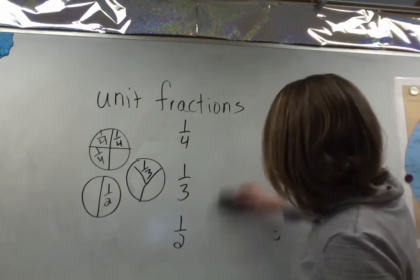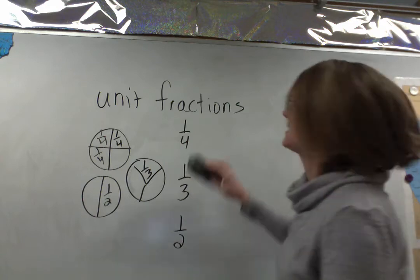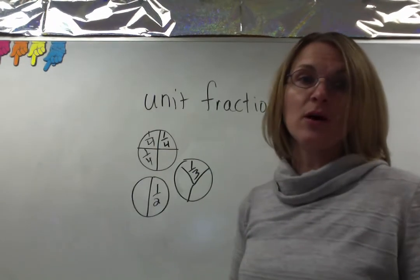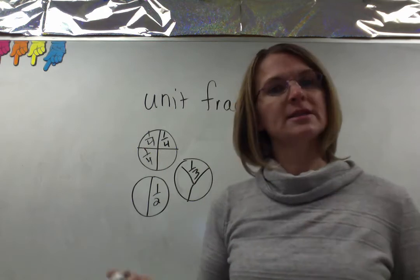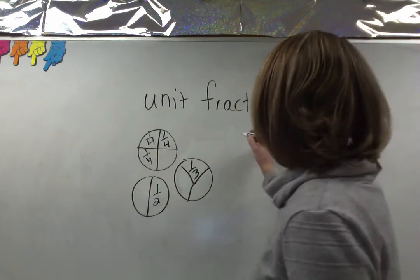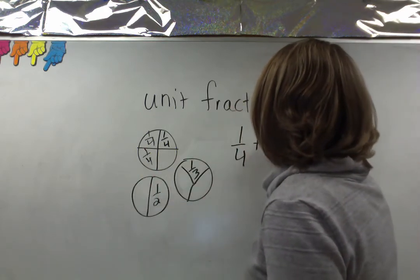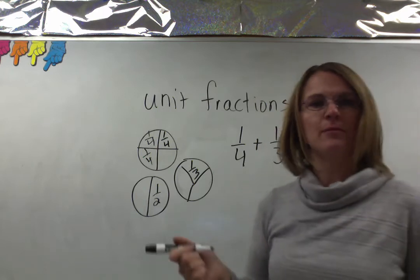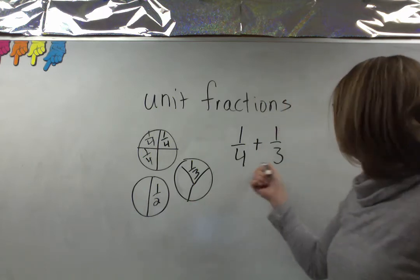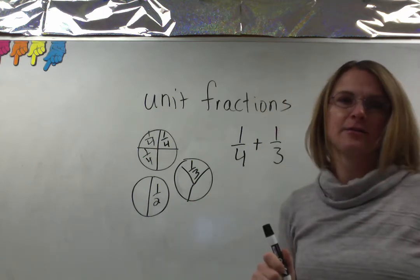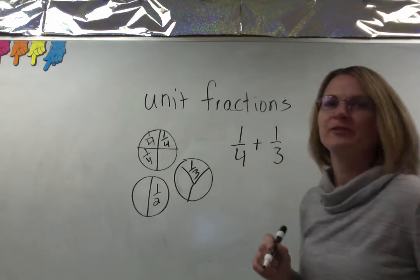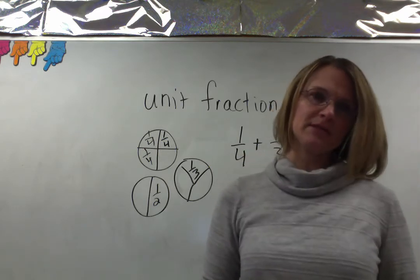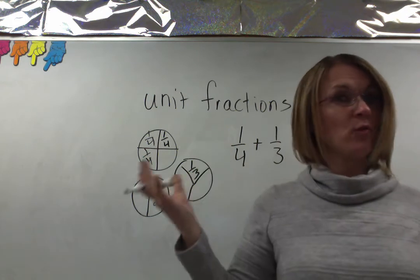Unfortunately, it's not always quite that easy, because sometimes we don't always add fourths and fourths. Sometimes we do something like add a fourth plus a third, but this causes a problem because they're not the same size. My bottom numbers are different, and I just told you you can't add the bottom numbers — so then what do you do?